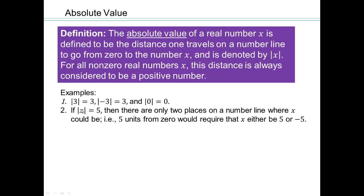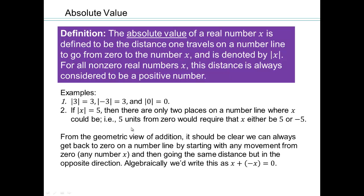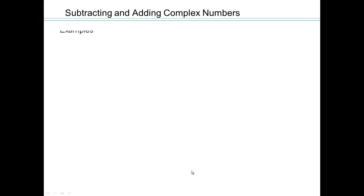If I told you that I want to look at all numbers for whom absolute value is 5, then there's only two places on the number line, 5 and negative 5 are the only two places for whom distance from 0 is 5 units, right? So from geometric view of addition, it should be clear, we can always get back to 0 on the number line by starting with any movement from 0, and then going the same distance, but in the opposite direction. So that algebraically translates into saying x plus opposite of x equals 0.